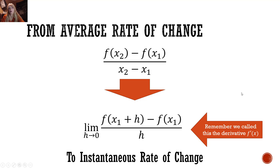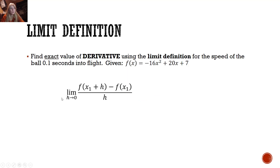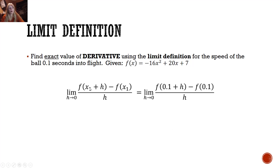So if I want to find the exact value of the derivative using the limit definition for the speed of the ball — remember, the derivative is the rate of change, how fast the ball is going — I want to find it at a tenth of a second into the flight. I'm given this function, so where I see x₁ I'm going to plug in 0.1 because that's my value of interest.